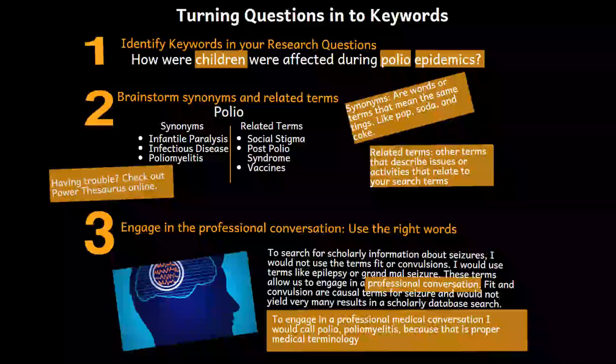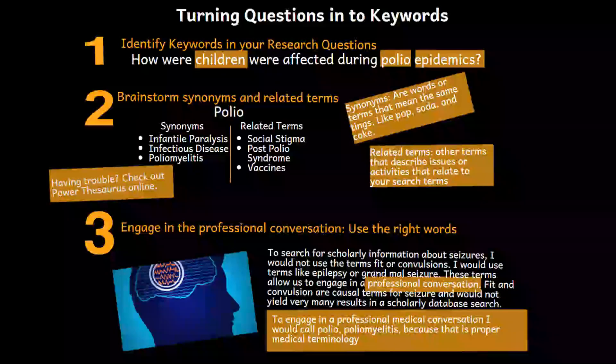Start with your research question, and identify the main words in that question. As you can see in this example, those are children, polio, and epidemic. Next, you will want to brainstorm some synonyms and related terms that might work better than the initial ones you have identified.